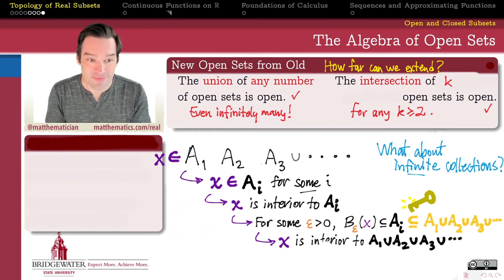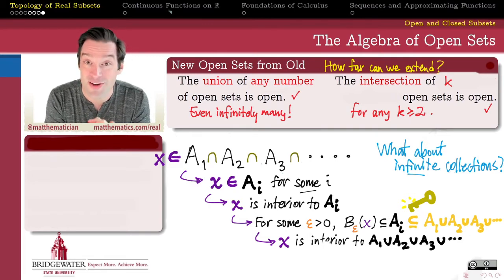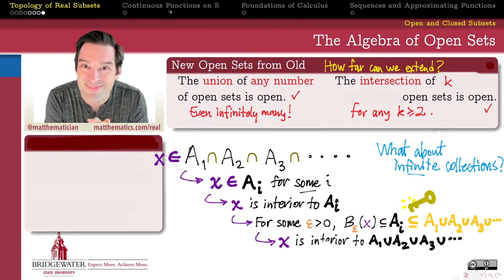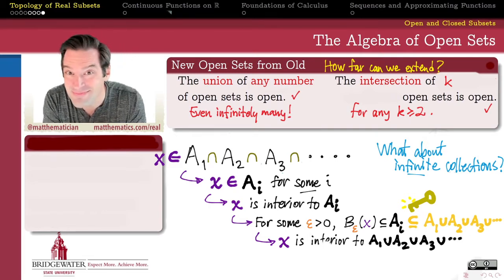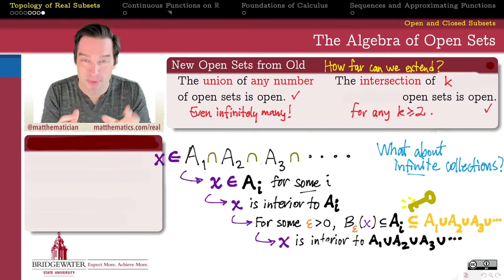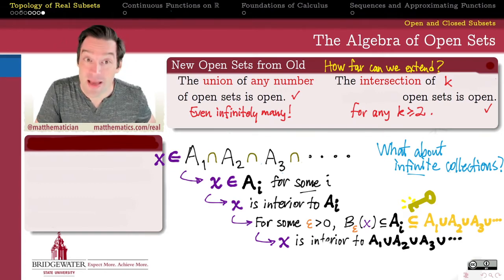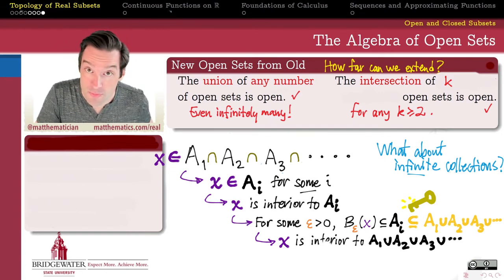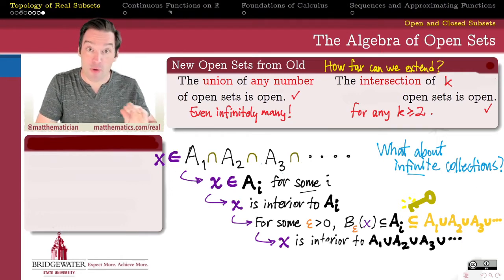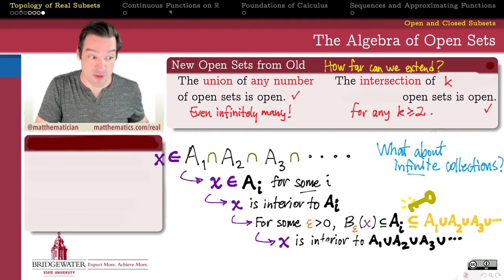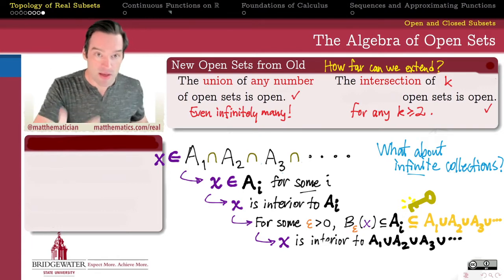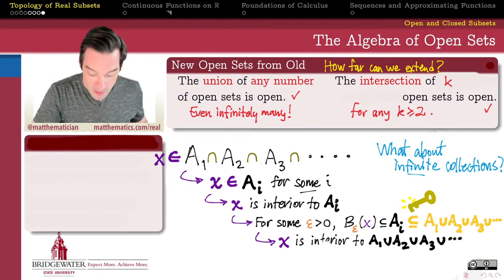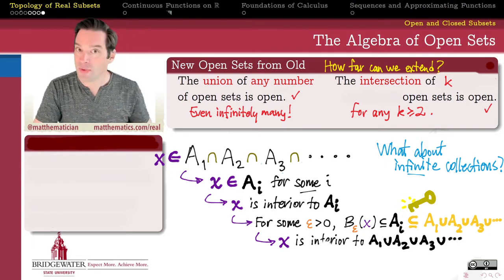Wouldn't it be great if the same were true for intersections? Unfortunately, we're about to find out that it's not. It's not going to necessarily be true that the intersection of infinitely many open sets remains open. To see why, let's step back through the proof that we did for the intersection of two open sets and figure out where our argument breaks down — because our argument didn't break down for unions; we just followed our same argument all the way through.